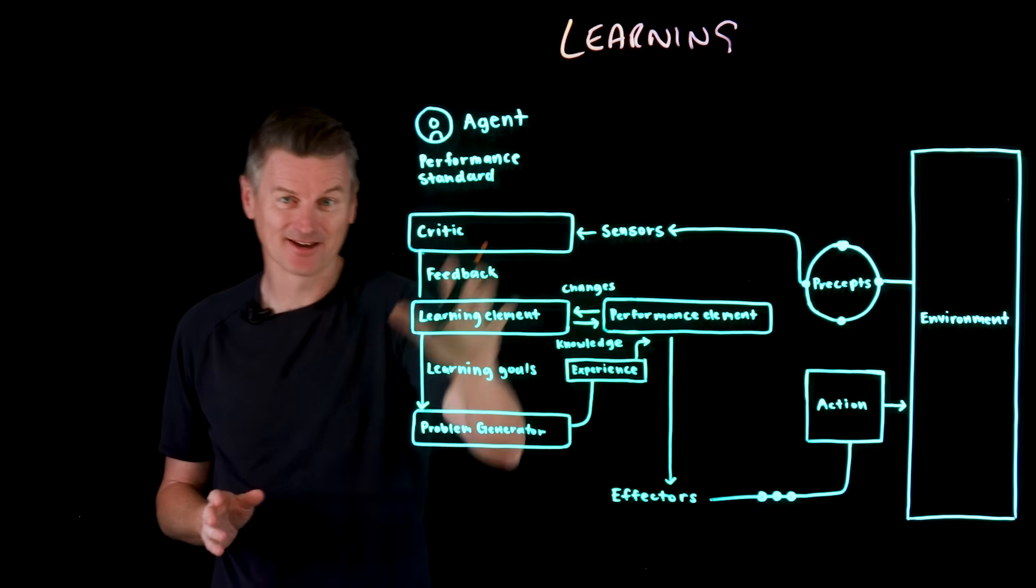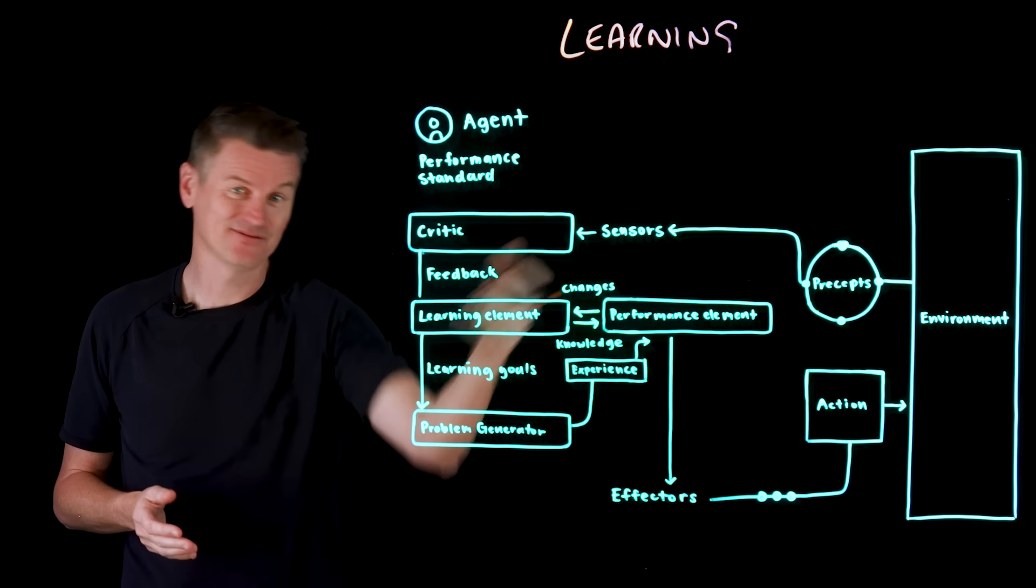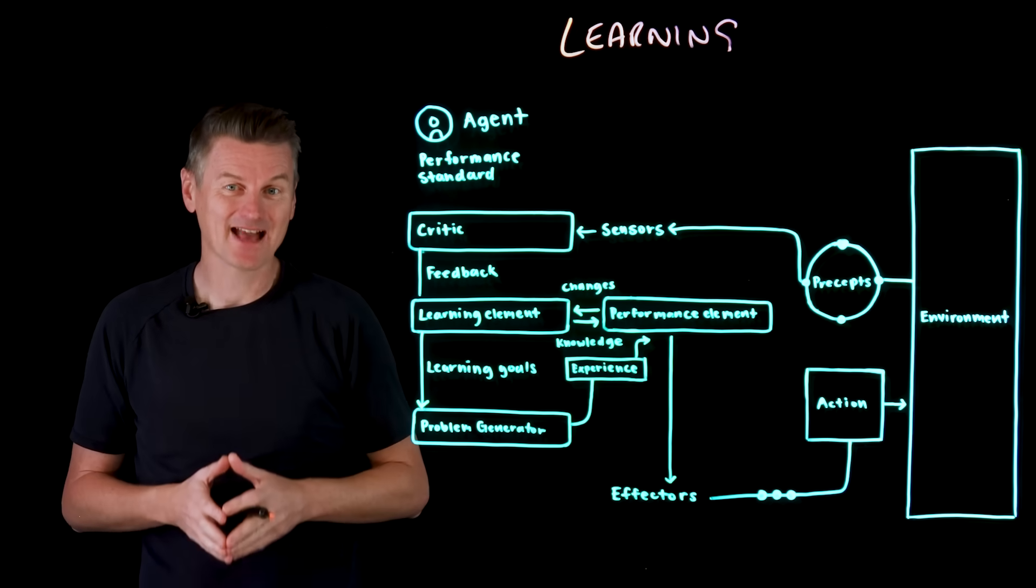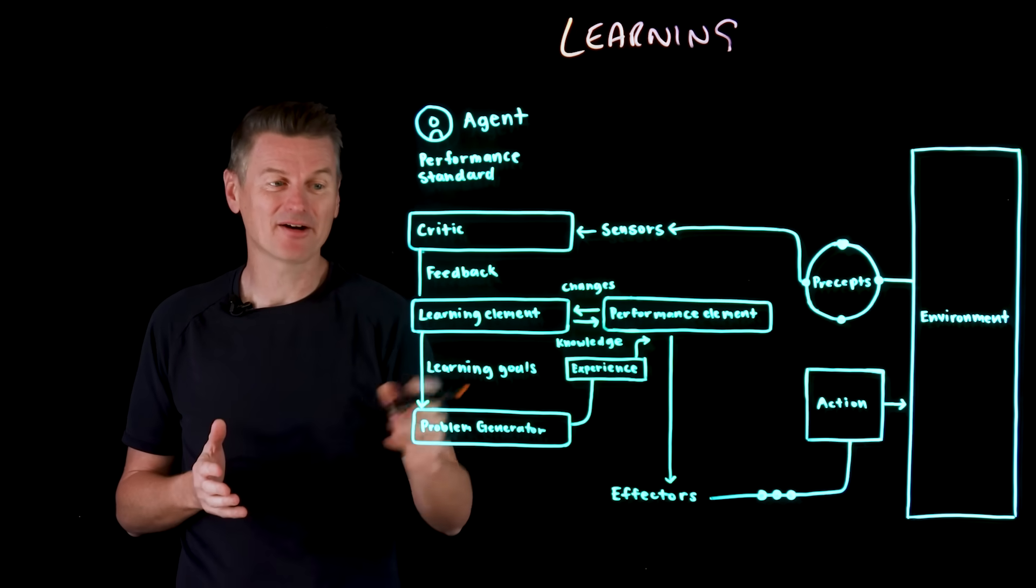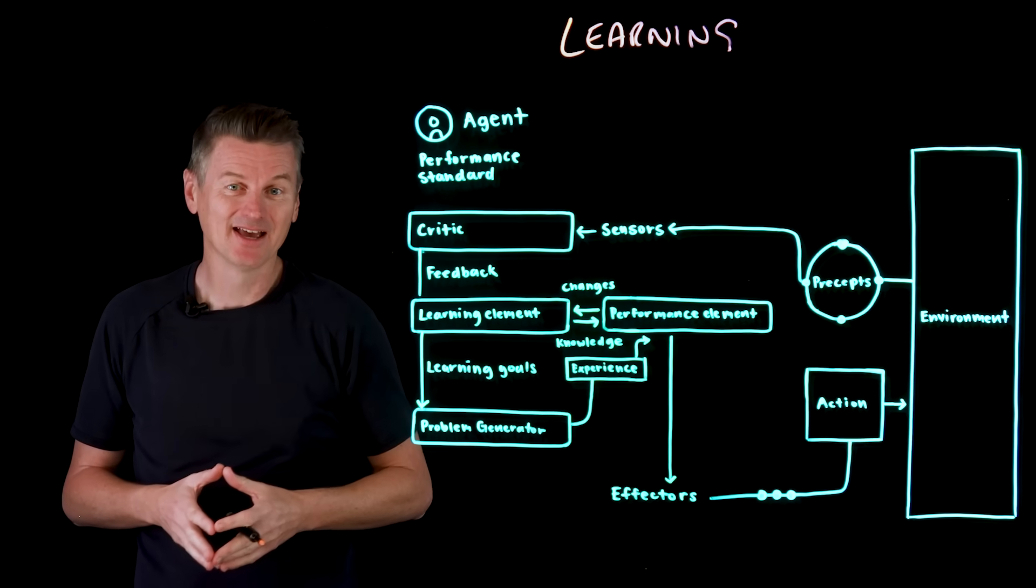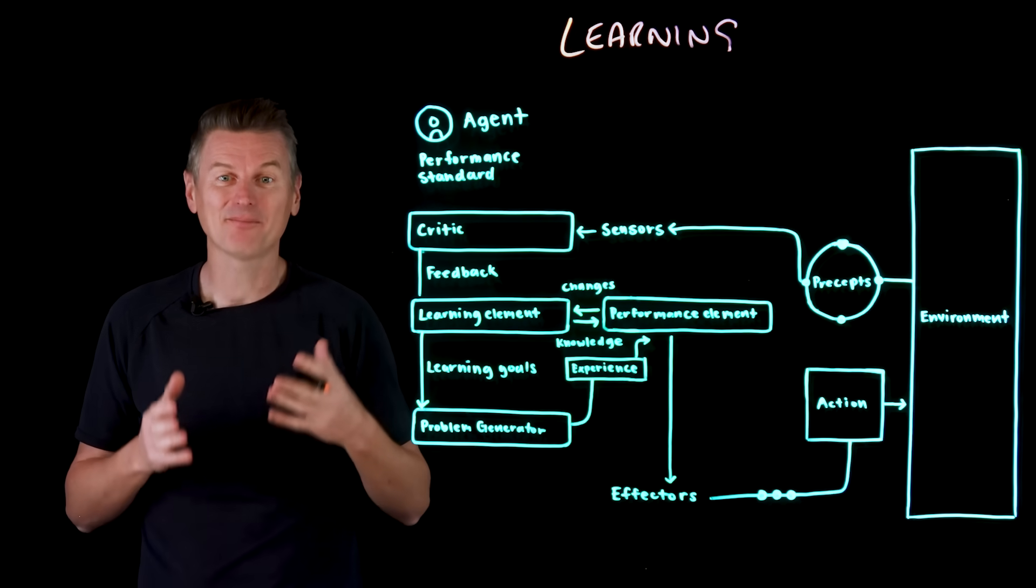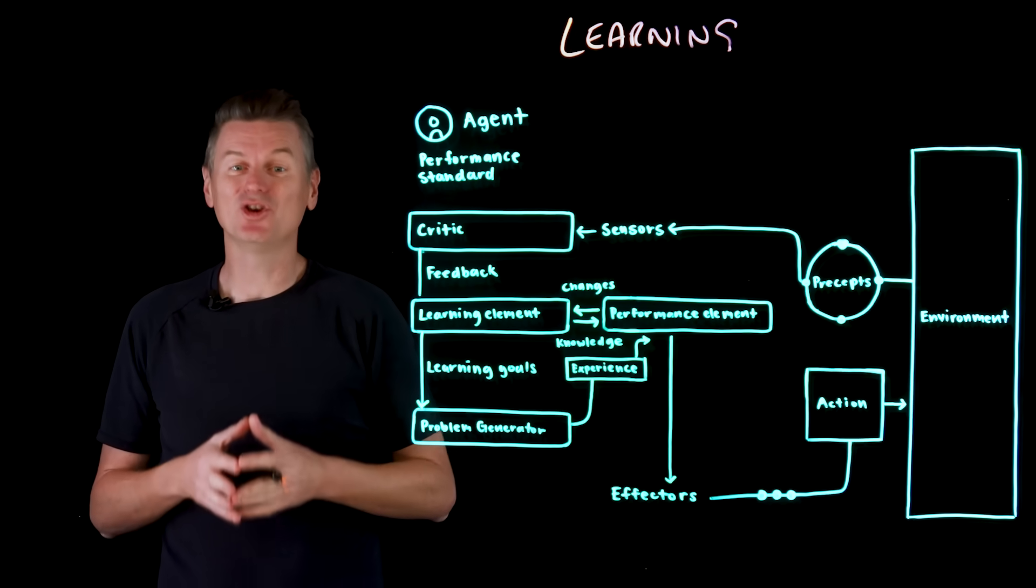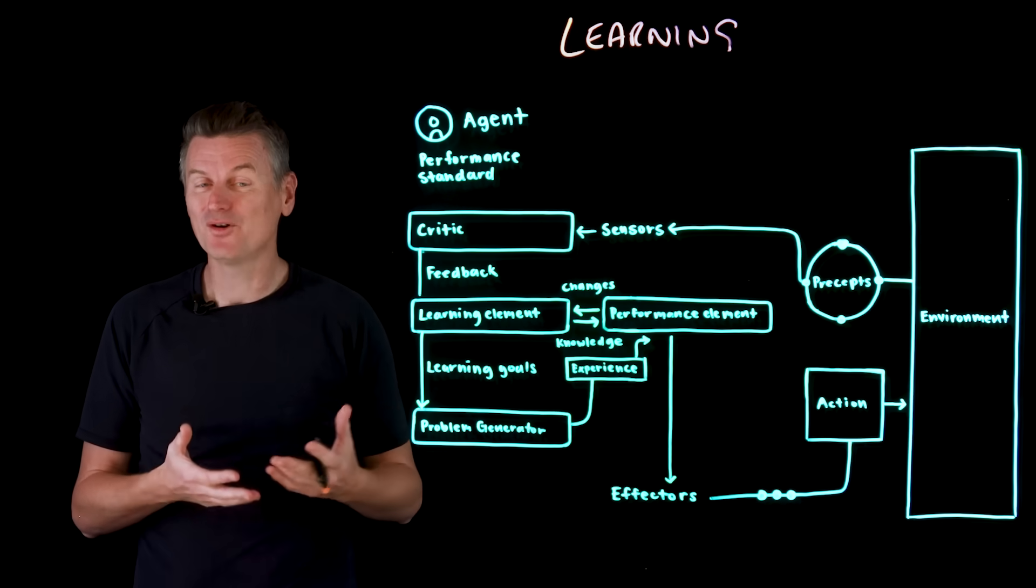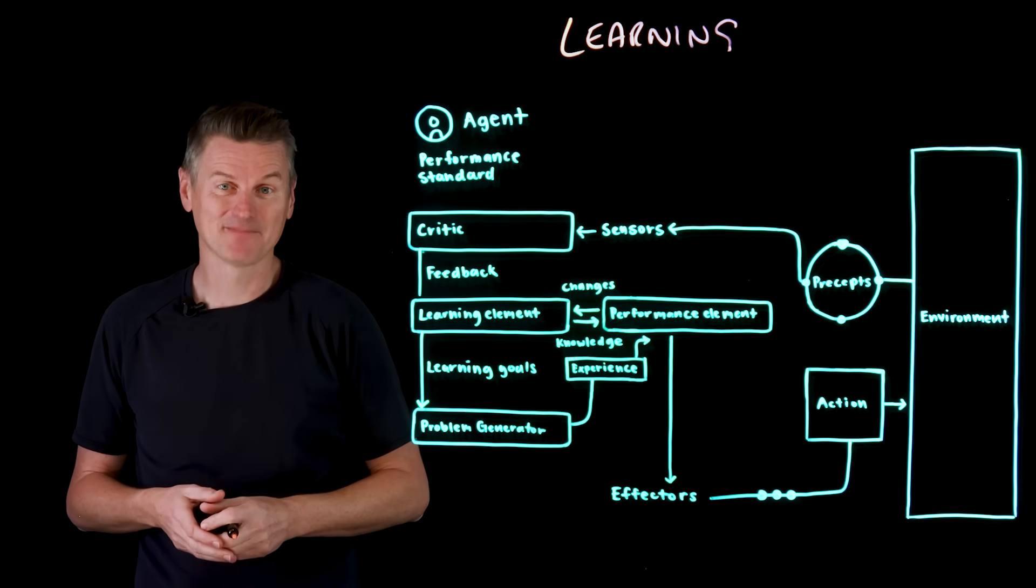Well, there's a critic component and that observes the outcome of an agent's actions via the sensors, and it compares them to a performance standard. That gives us a numerical feedback signal that's often called a reward in reinforcement learning, and this reward is then passed to a learning element that updates the agent's knowledge using the feedback from the critic. Its job here is to improve the agent's mapping from states all the way through to actions.